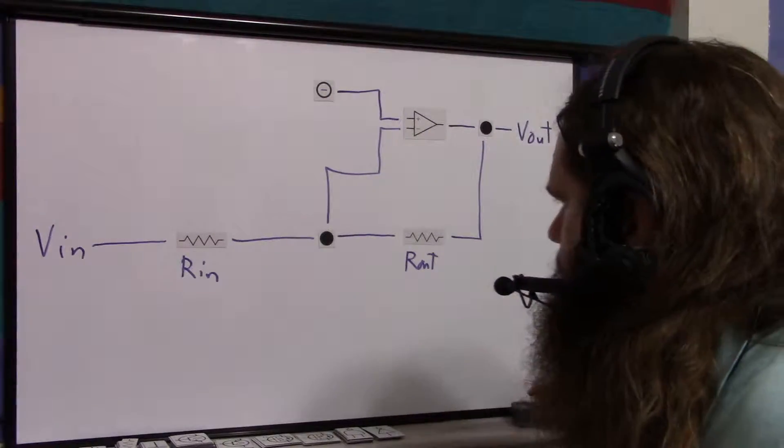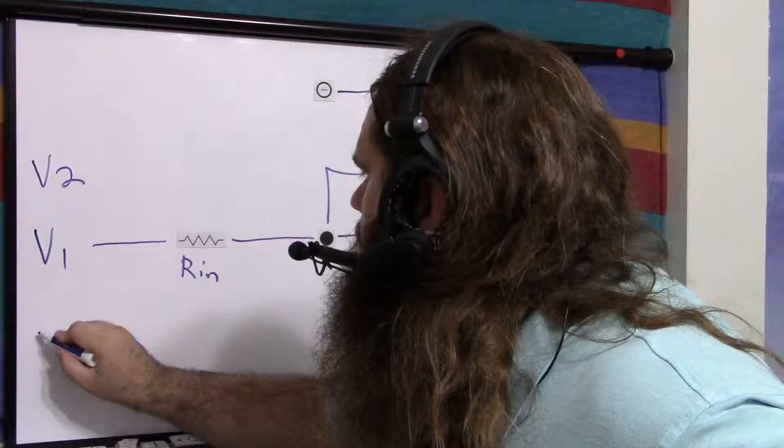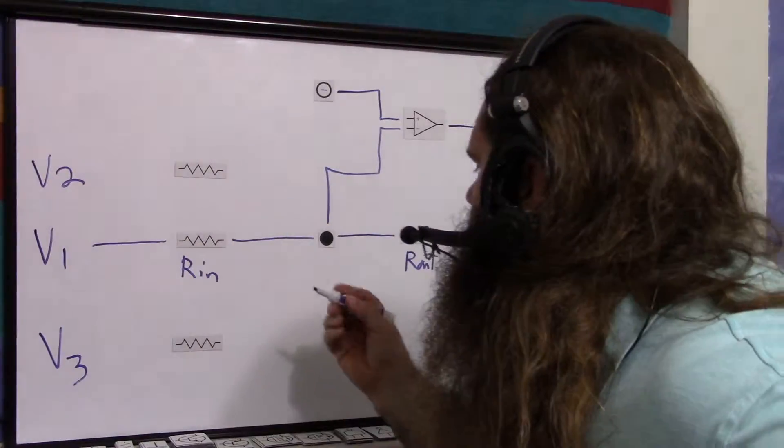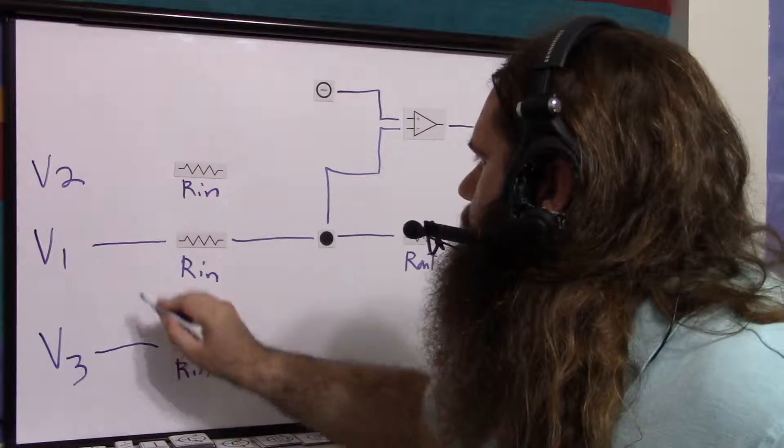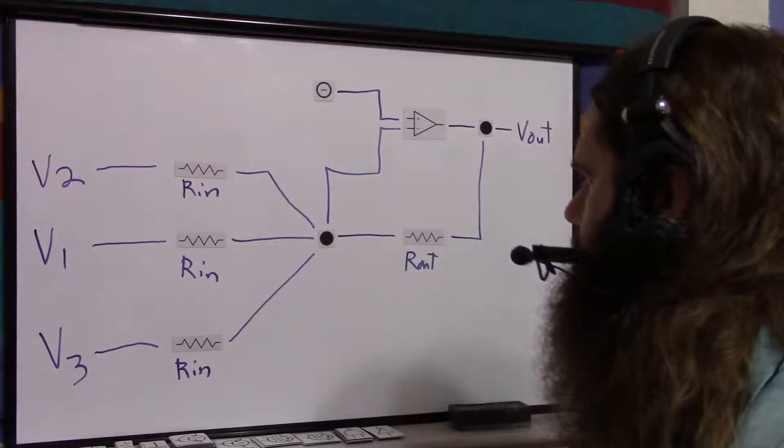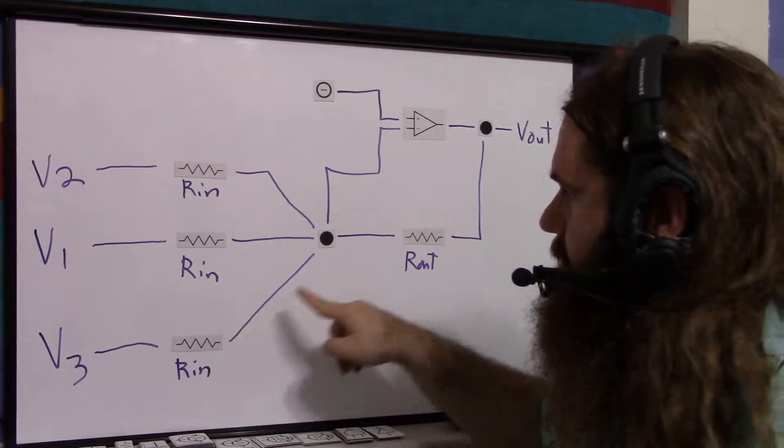Let's change Vin to V1. Now, let's say we also have V2 and V3. How do we add those in? Very simple. Extra resistors. They're the same value. R in and R in. Hook the voltages into those and just connect it to the same point. We literally just add the inputs in the same as it was, and there's the junction.